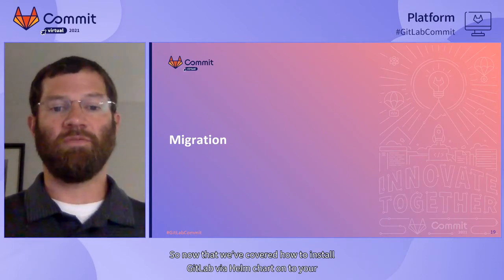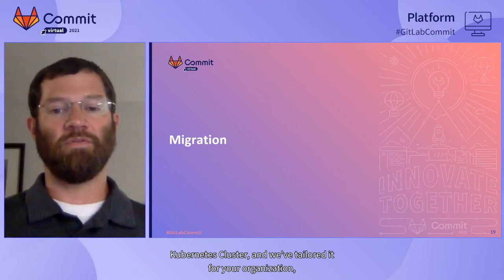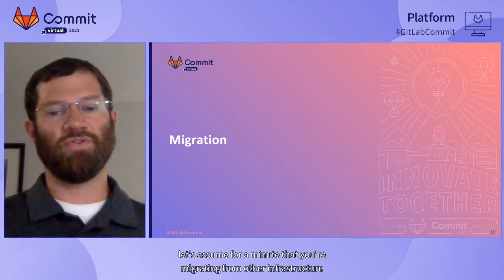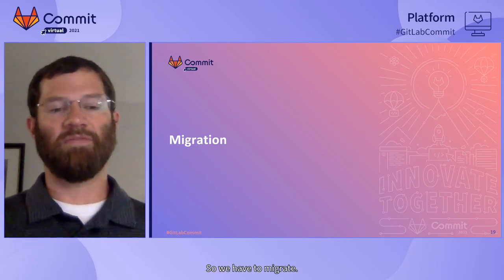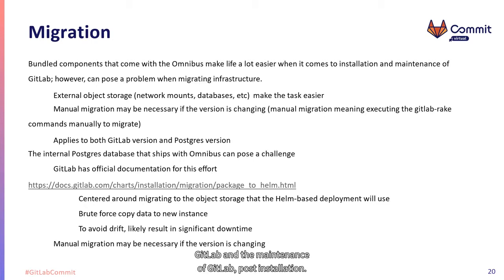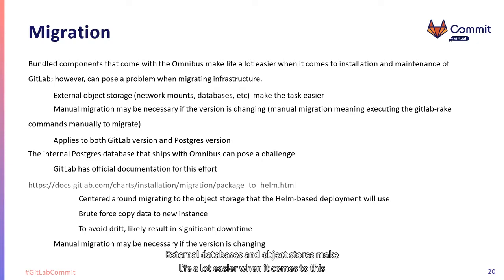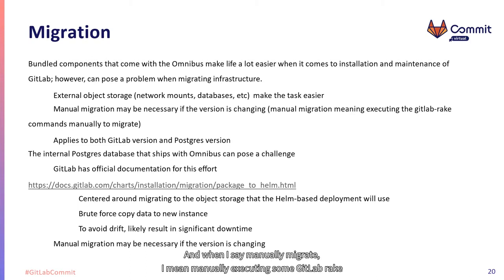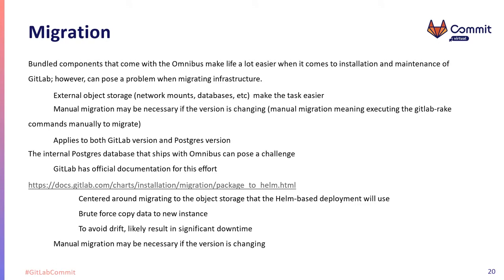Now that we've covered how to install GitLab via Helm chart onto your Kubernetes cluster and tailored it for your organization, let's assume you're migrating from other infrastructure and didn't use an external database or pluggable object storage — so we have to migrate. The bundled components that come with the Omnibus installation make life easier for installing and maintaining GitLab post-installation, but they can pose a problem when migrating infrastructure. External databases and object stores make life a lot easier for this migration. Depending on your situation, you may have to manually migrate certain things, especially if the version is changing.